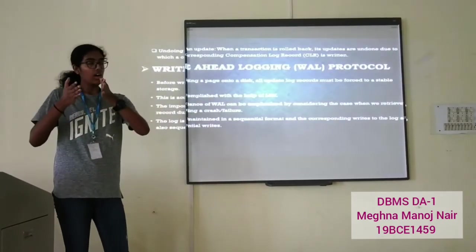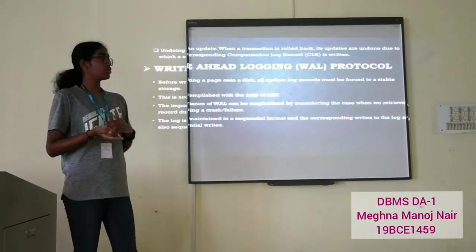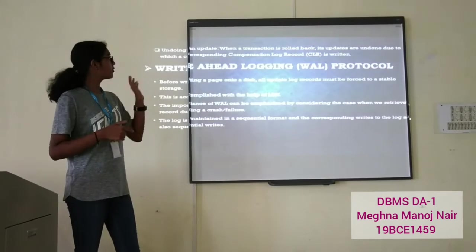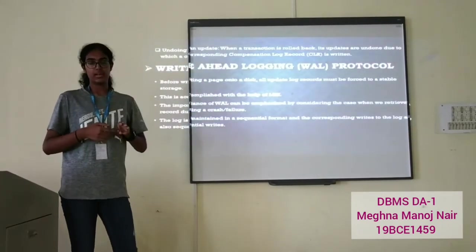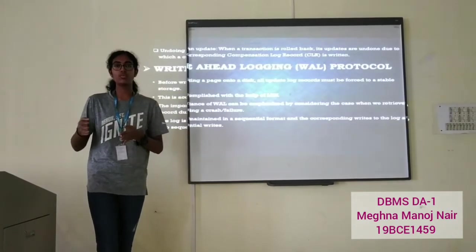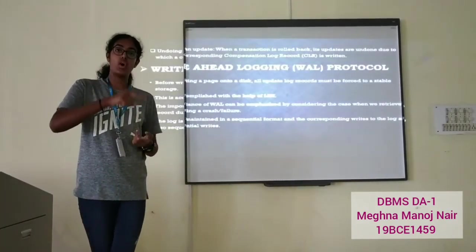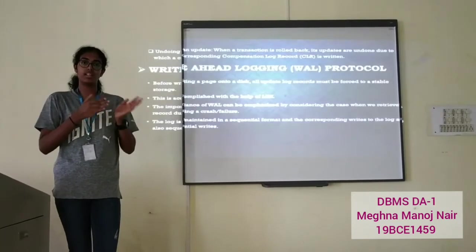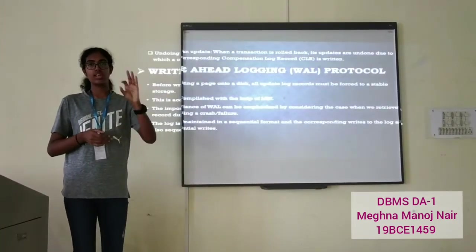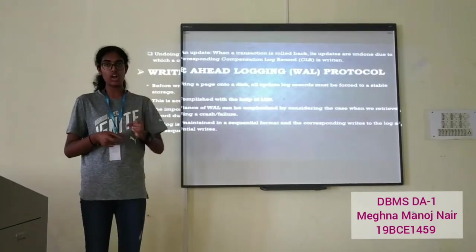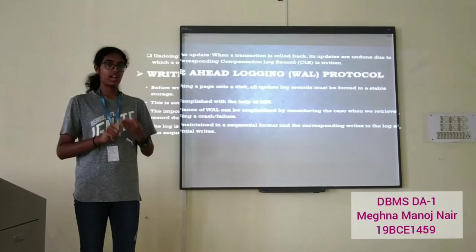Another reason we need logs is for undoing an update. If we want to undo or abort an update, we also need a log. When a particular transaction is rolled back, all of its updates are going to be undone, and there will be a corresponding compensation log record written — a log record that keeps a collection of all the logs or actions which have been undone. That is what is referred to as a compensation log record. So there are three main reasons for logs: for updating, for undoing an update, and in the process of commit.